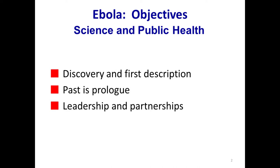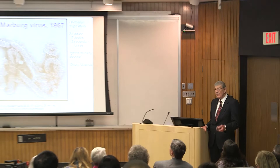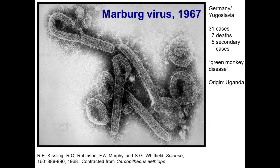The story begins in 1967 when a cluster of Cercopithecus aethiops — African green monkeys — arrived in Hamburg and Belgrade. Thirty-one laboratory technicians got sick, seven died, and there was secondary transmission. A brand new virus called Marburg was identified.